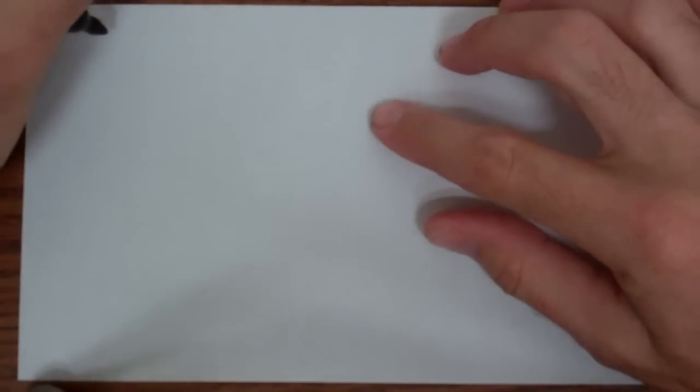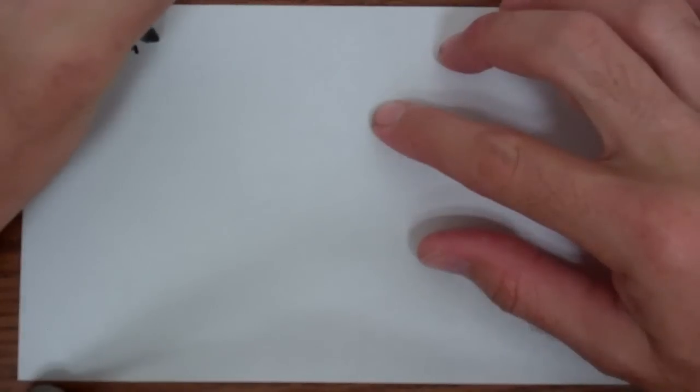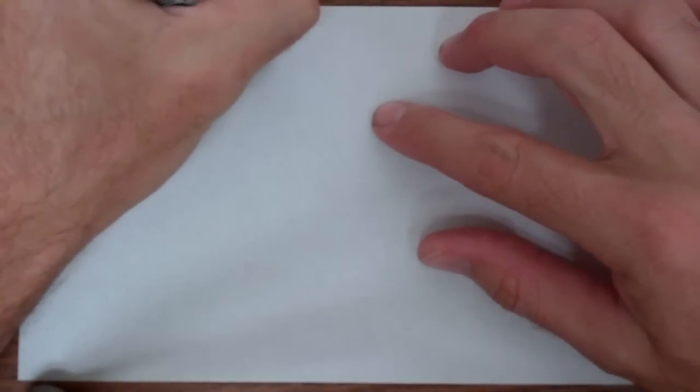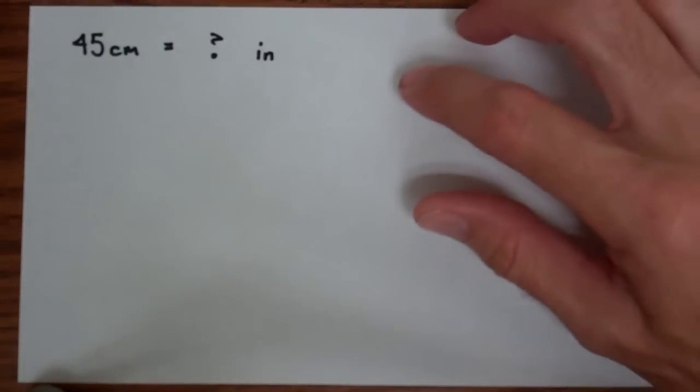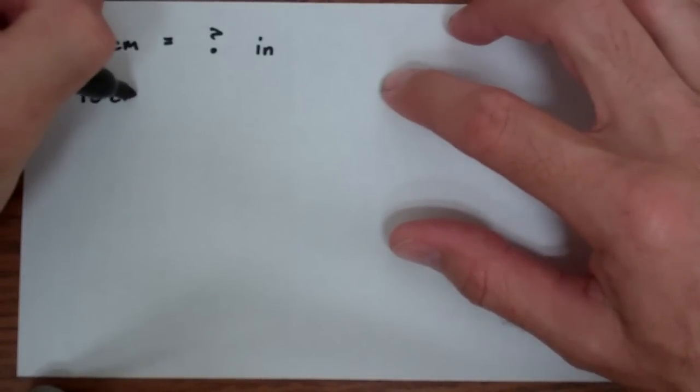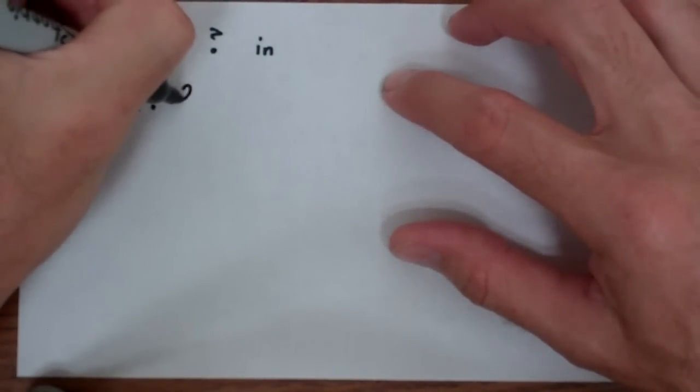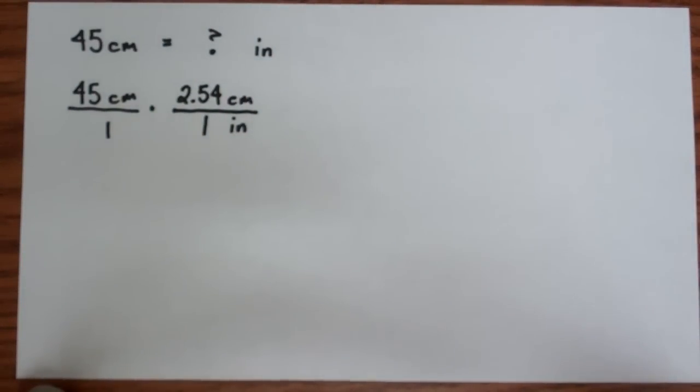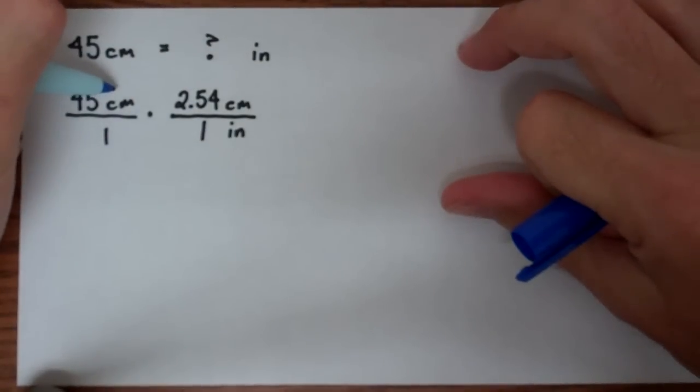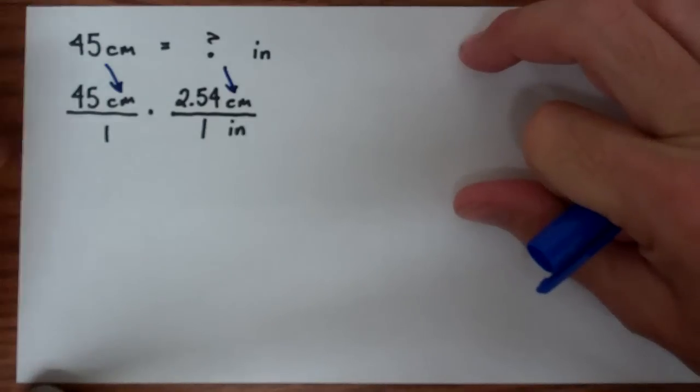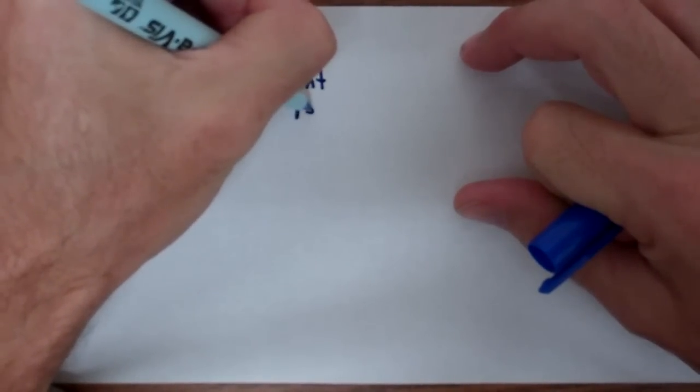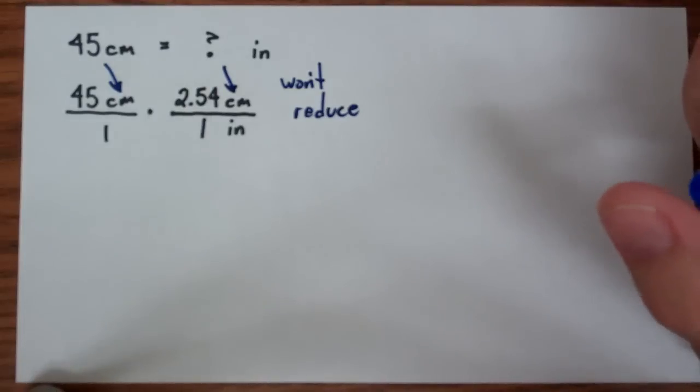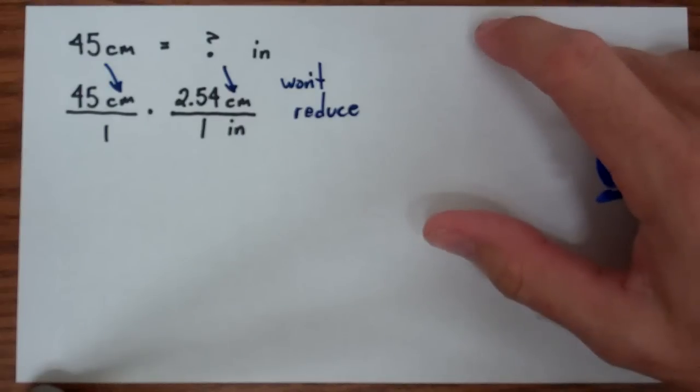Now, what if we wanted a slightly different problem? What if the problem was to find 45 centimeters was how many inches? Well, we had that proportion. We said, you've got 45 centimeters over 1 times 2.54 centimeters over 1 inch. But now, as you're looking, the centimeters are both in the numerator. So dimensionally, these won't reduce. So this can't be the right conversion factor. You need one in the numerator and one in the denominator.